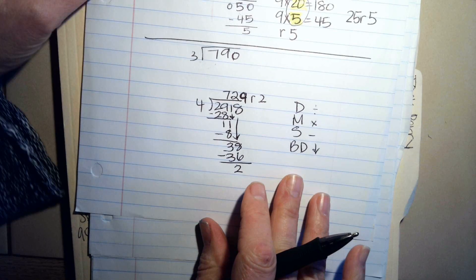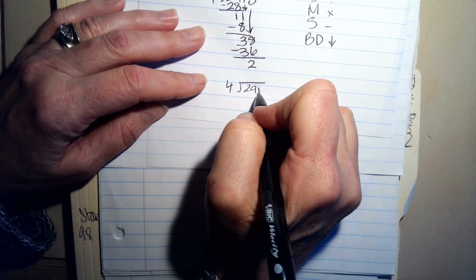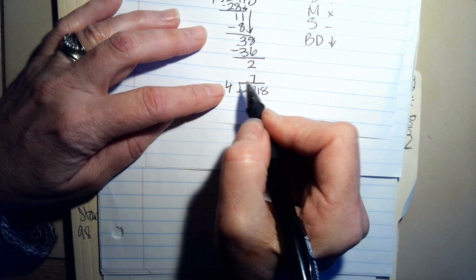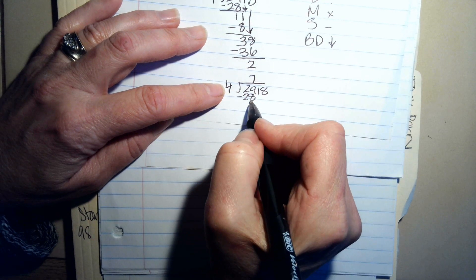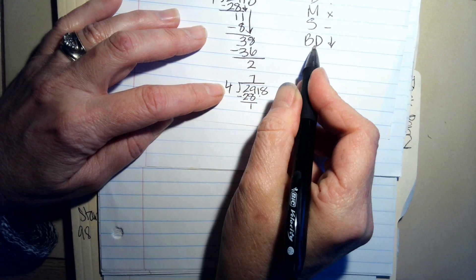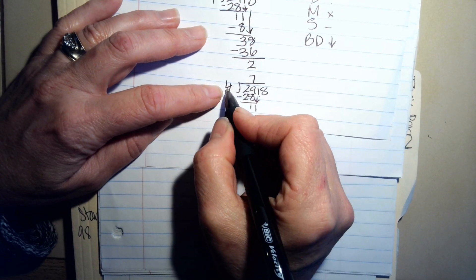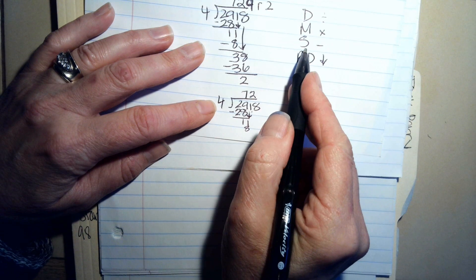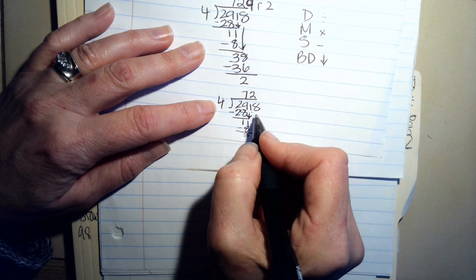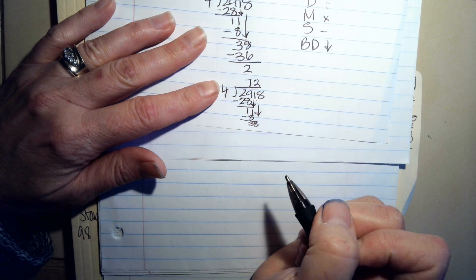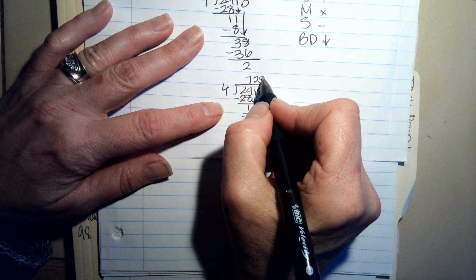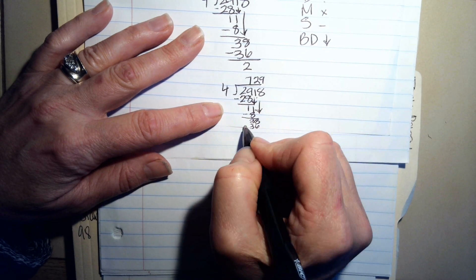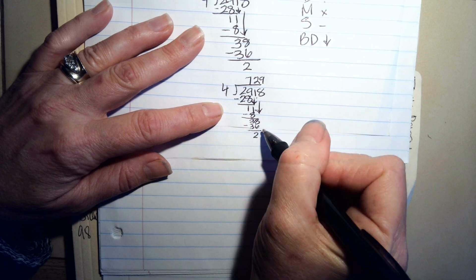So my first step was divide. 4 goes into 29, which is division. 29 divided by 4 is 7. Now I multiply. 7 times 4 is 28. Now I subtract. 29 minus 28 is 1. Now I bring down. Now I divide again. 4 goes into 11, 2 times. Now I multiply. 4 times 2 is 8. Now I subtract. 11 minus 8 is 3. Then I bring down again. 4 goes into 38, 9 times. Now I multiply. 9 times 4 is 36. Now I subtract. 38 minus 36 equals 2. There's nothing more to bring down. So that's my remainder.